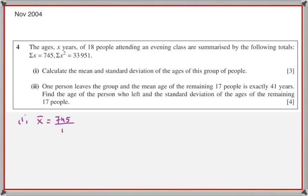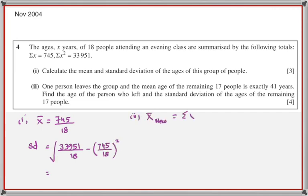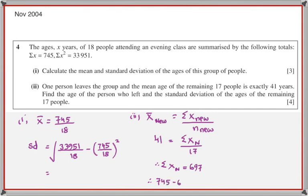The first part is simple — calculate mean and standard deviation. The second part is trickier: one person leaves the group and the mean age of the remaining 17 people is exactly 41 years. If x̄ and n are given, you can find Σx: Σx = x̄ × n, so 17 × 41 = 697, which is the sum of ages of the 17 remaining people. The original sum was 745; the difference is 48 — so the person who left was 48 years old.